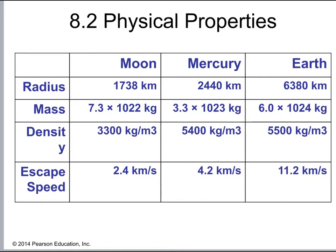In addition to size, we can also compare their masses. There's a bit of a typo in the table — it should read 10 to the 22nd power, 10 to the 23rd power, and 10 to the 24th power respectively. The masses are 7.3 × 10²² for the Moon, 3.3 × 10²³ for Mercury, and 6 × 10²⁴ for the Earth. The coefficients 7.3 and 6.0 are close, but the exponents 22 and 24 are far apart, telling us the Earth is about 100 times as massive as the Moon.